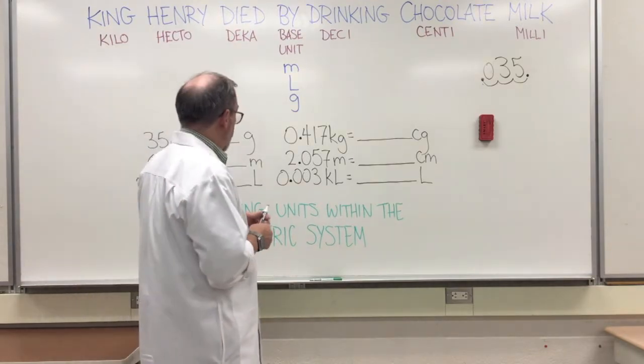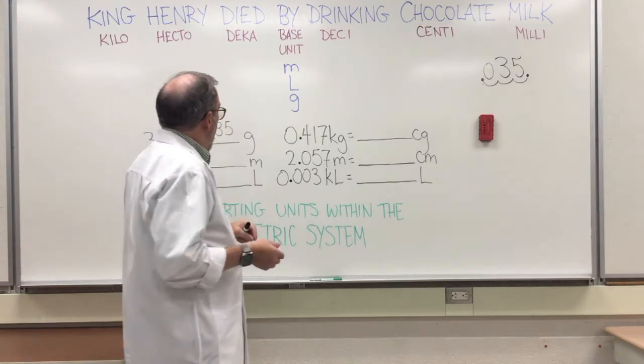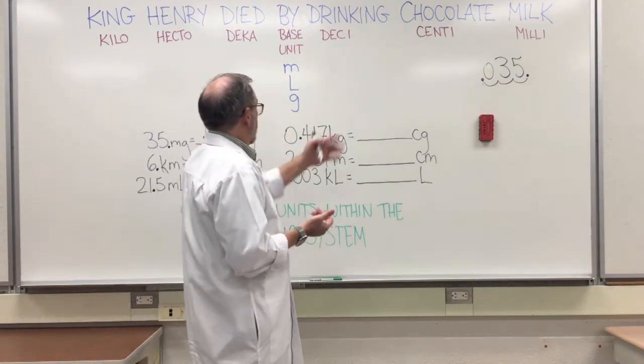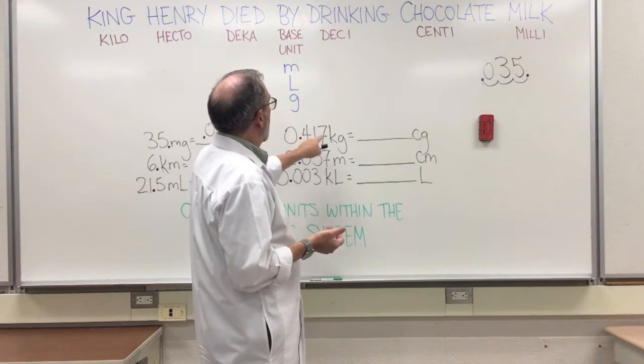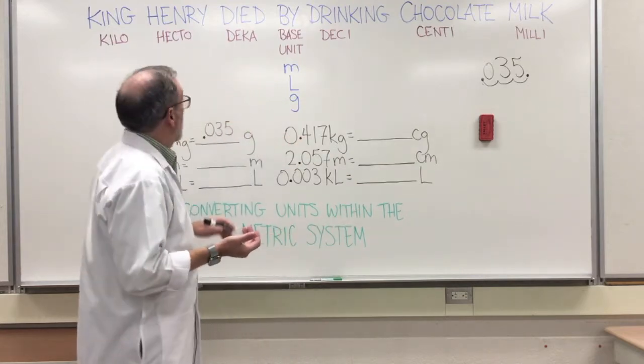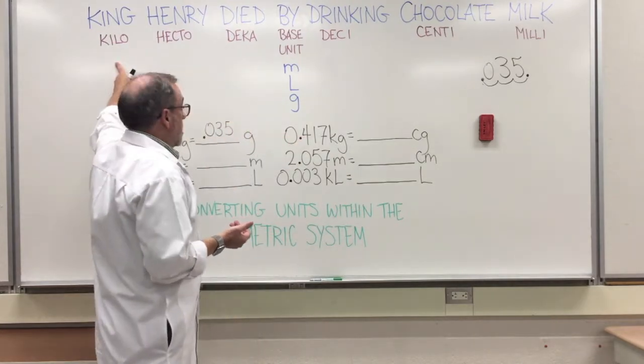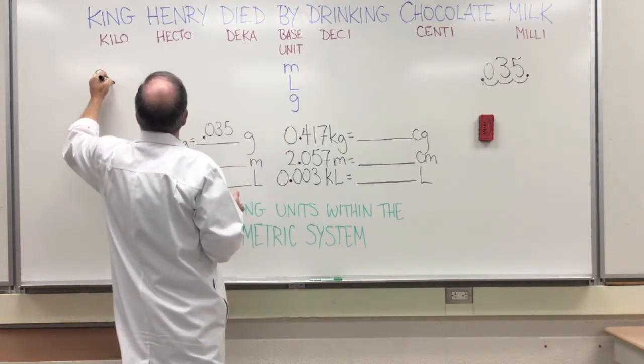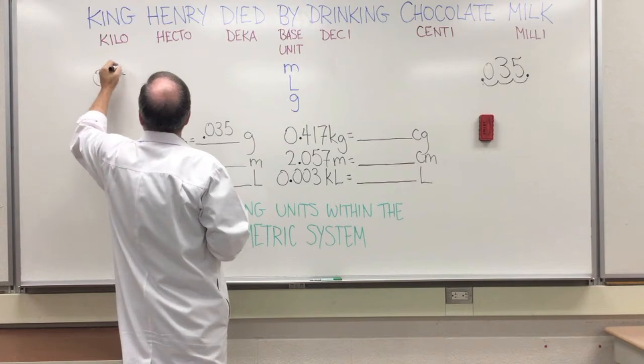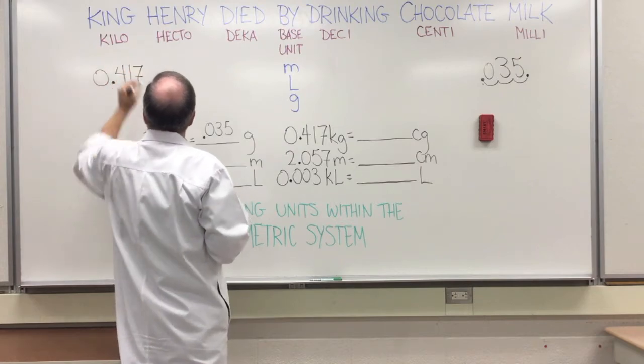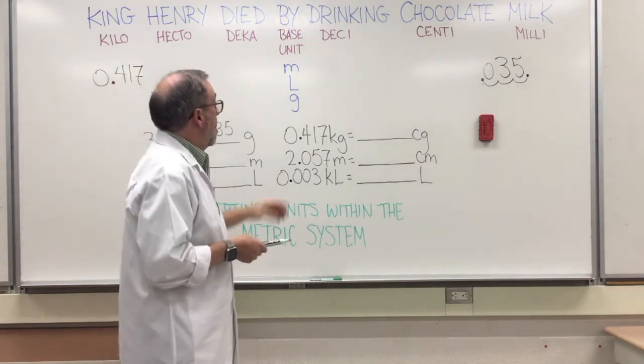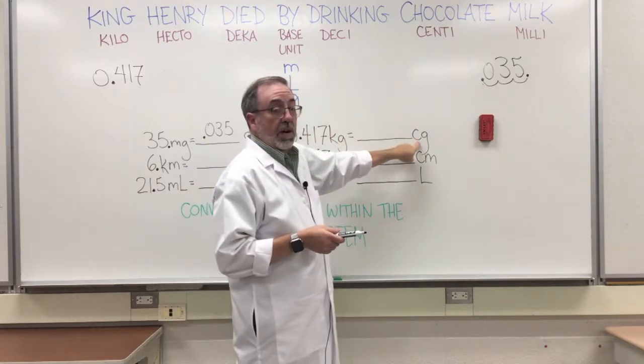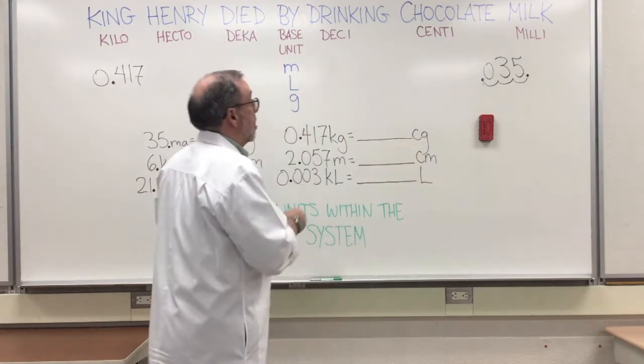So let's do another one. Let's jump over and do this one - 0.417 kilograms. So we're gonna have to come up here to kilo, and we'll put 0.417. That's kilograms. We want to know what it is in centigrams, so we got to come down here to centi.